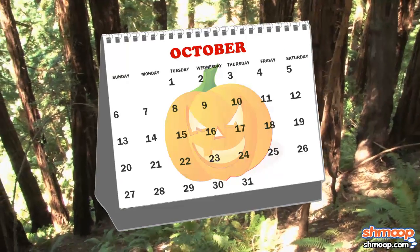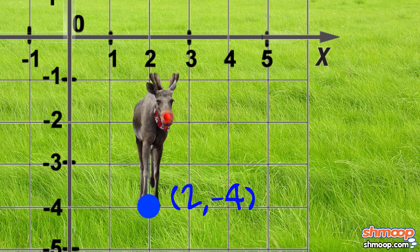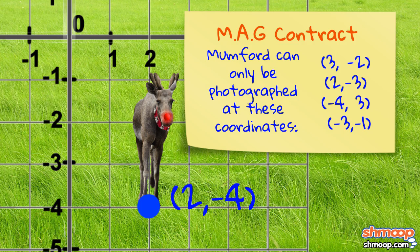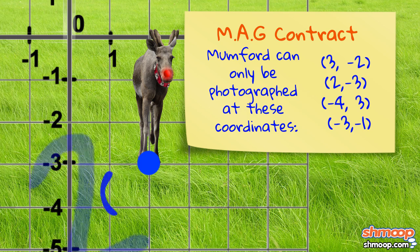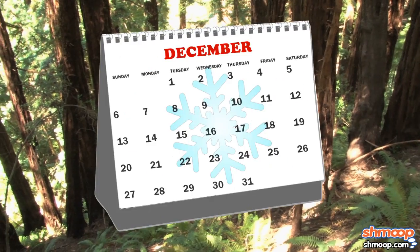Now check out this one for Mr. October. Nope, Mumford's going to have to trick or treat somewhere else. He'll need to move one square up to be in compliance with his contract. Yep, (2, -3) is totally fine.